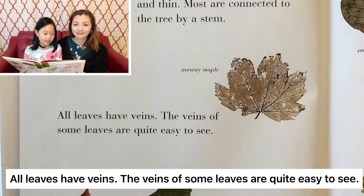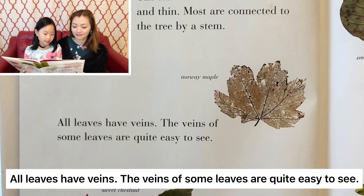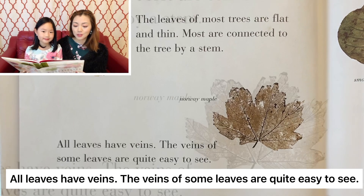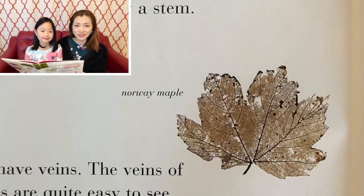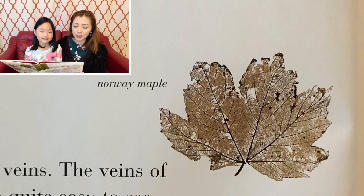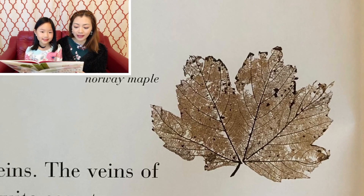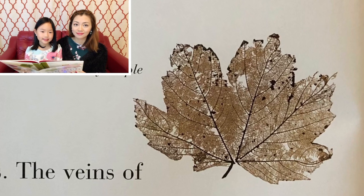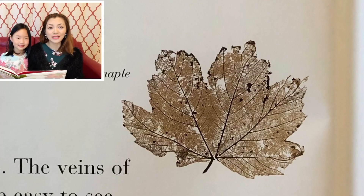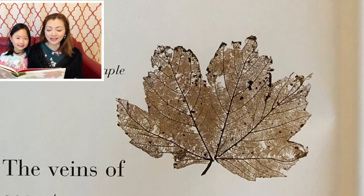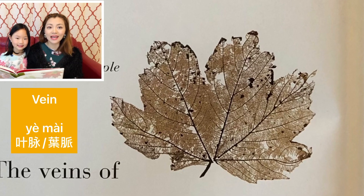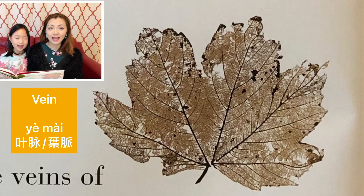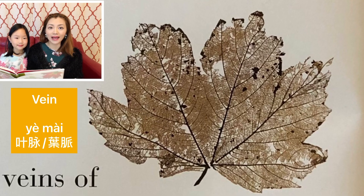All leaves have veins. The veins of some leaves are quite easy to see. 所有的叶子都有叶脉。有些树叶的叶脉非常容易观察。我们来学一个词：Vein，叶脉。